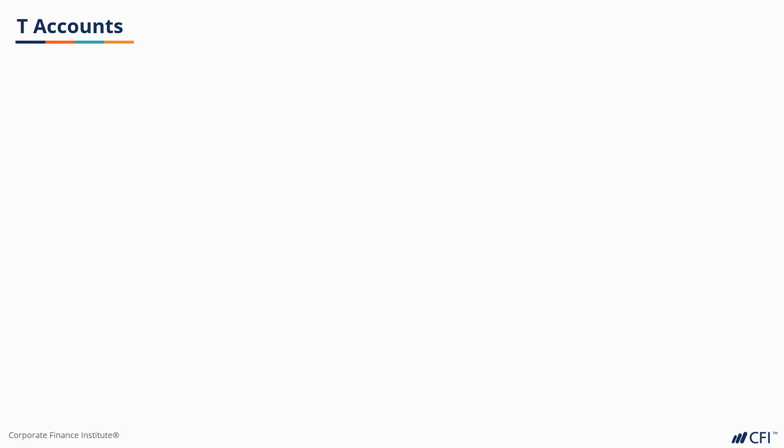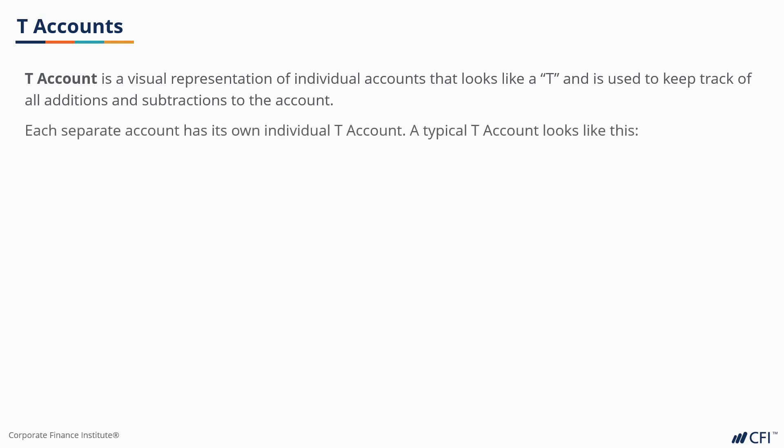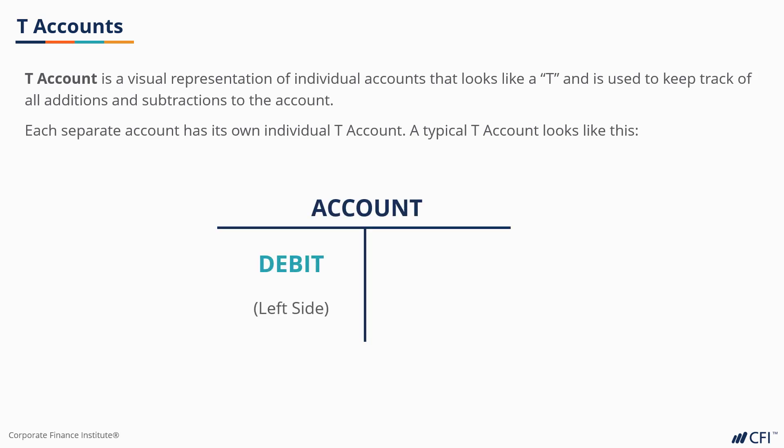T-accounts are how accountants keep track of debits and credits for a business. Each account for the company will have its own T-table that looks like the example below. It makes the shape of a T with debits on the left side and credits on the right side.